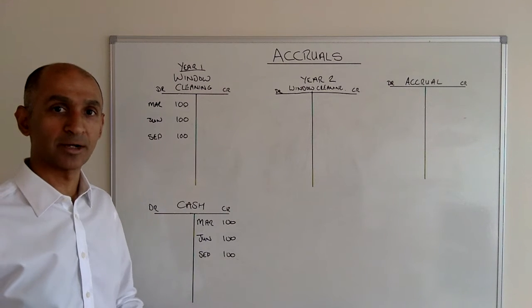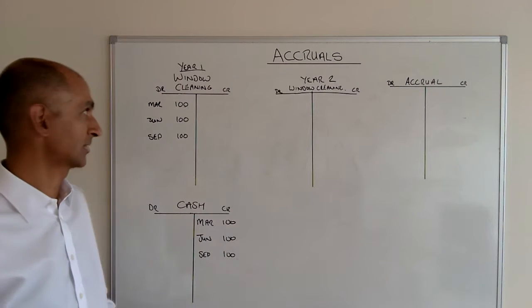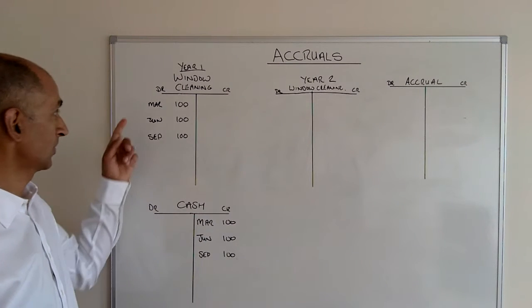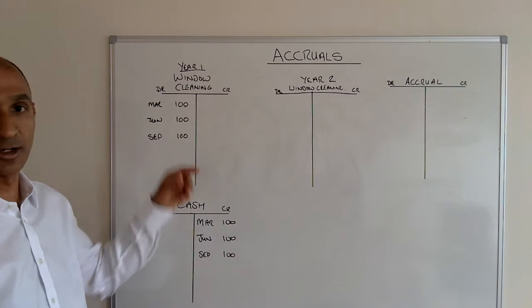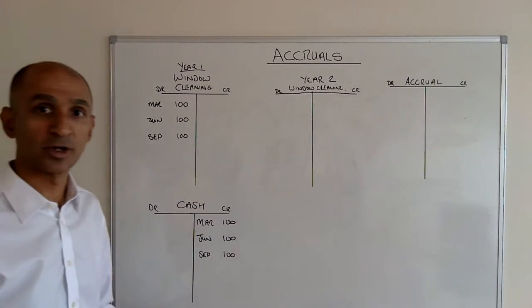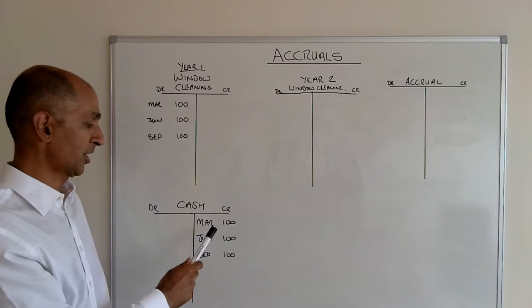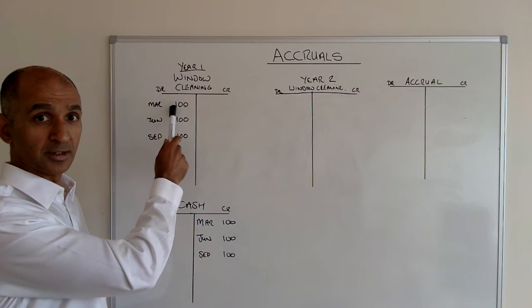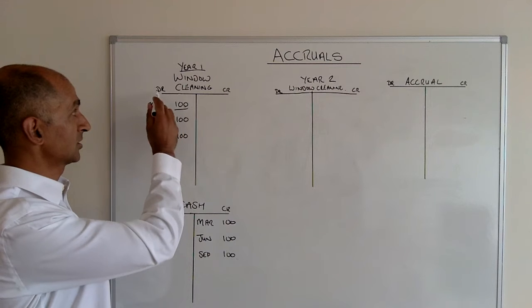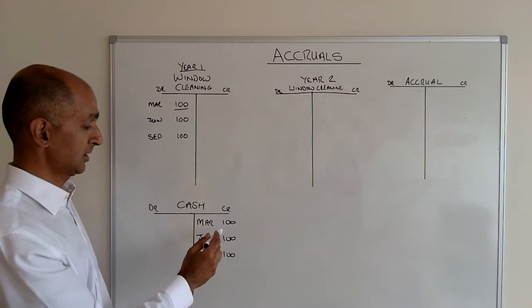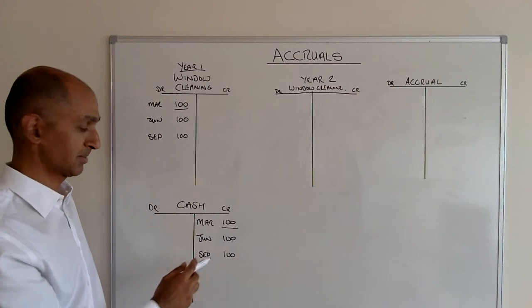Assume you have a company or a business and you get your windows cleaned four times a year. The company comes along and they clean your windows and they charge 100 pounds each time. So they came along in March, cleaned your windows for 100 pounds, so you put a debit in the window cleaning expense account for 100 pounds, and you credited it back. You did the same thing in June and the same thing in September.